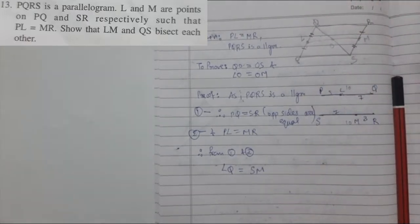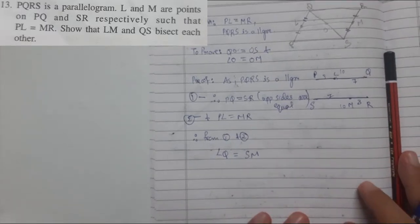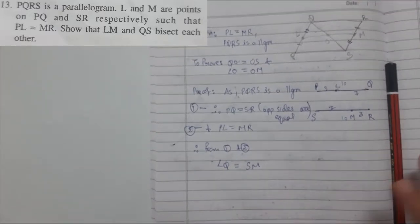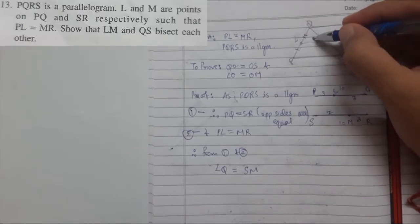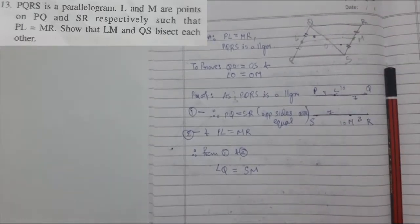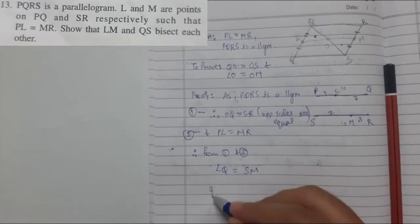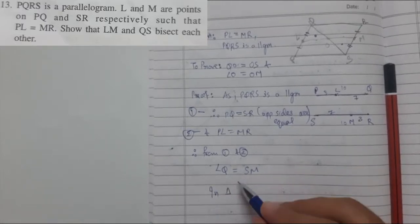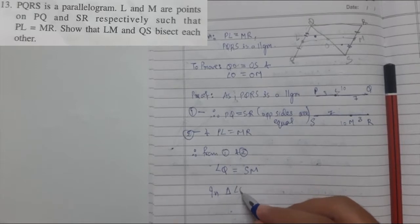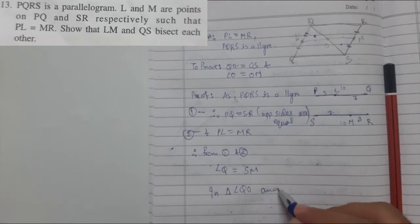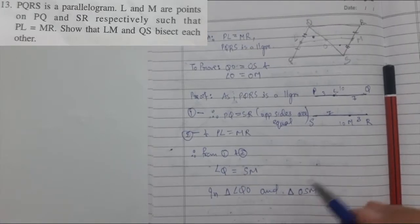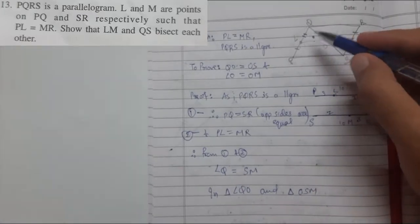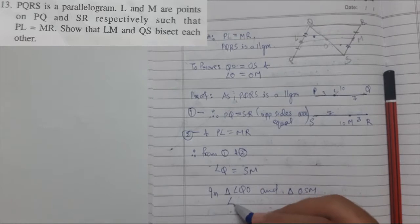Now the rest is easy. We need to prove the diagonals bisect each other, so we take two triangles for congruency: triangle LQO and triangle OSM. We know that LQ equals SM, which has been proved above.